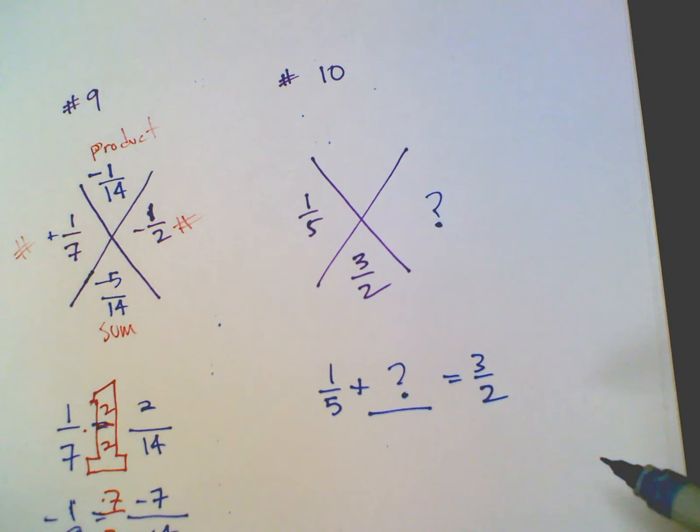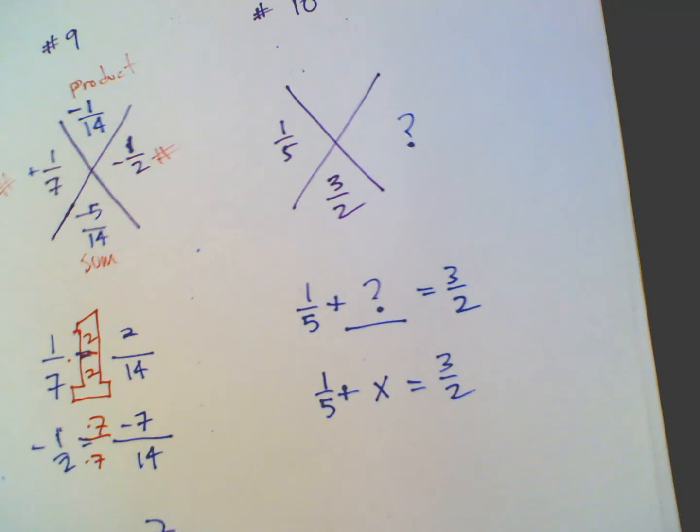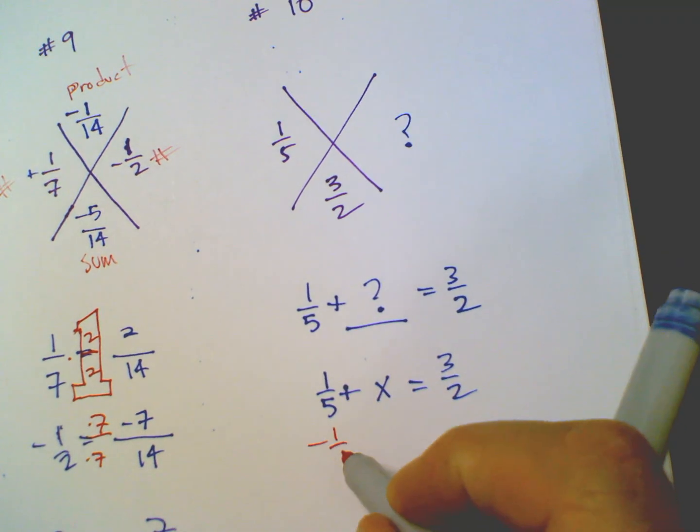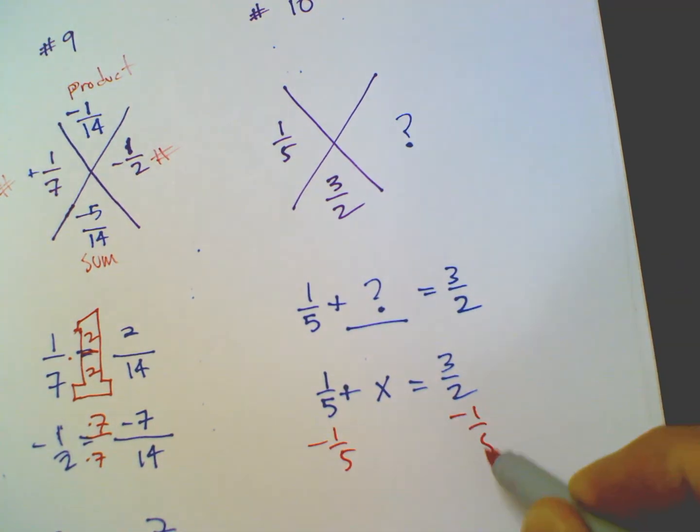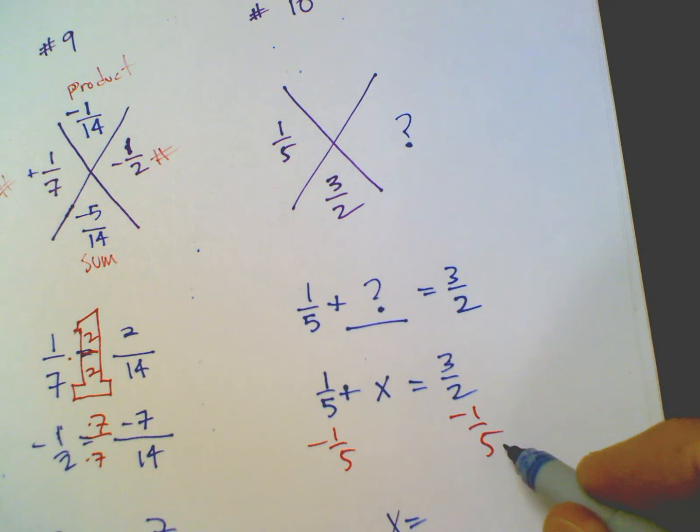Well, if you look at this as an equation and rewrite it having a variable, you could say 1/5 plus X, solving for X or solving for N or solving for Y or whatever variable we want to use. If I'm going to solve that, what do you do to figure that out? You would subtract 1/5 from both sides. That's how you're going to find X.